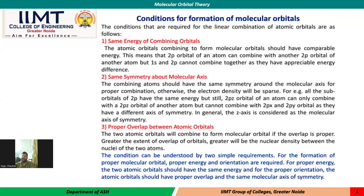When atoms combine together, overlapping must take place. If the combining orbitals have proper overlap, the greater the extent of overlap, the greater will be the electron density between the nuclei of the two atoms. When two atoms combine head-to-head, the overlapping area will be maximum, giving rise to higher electron density between the two nuclei. In summary, there are three basic requirements for the formation of molecular orbitals: same energy, same symmetry, and proper overlap of the combining orbitals.